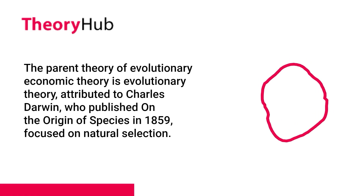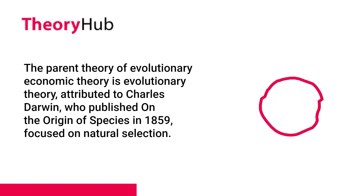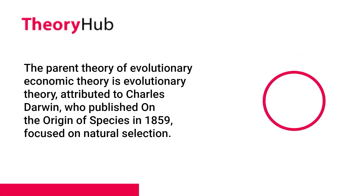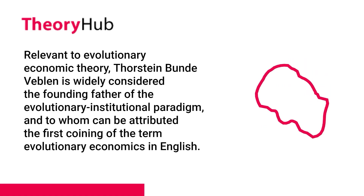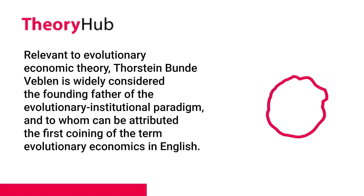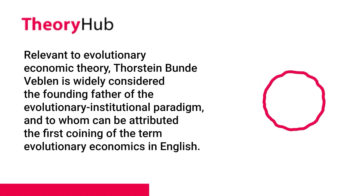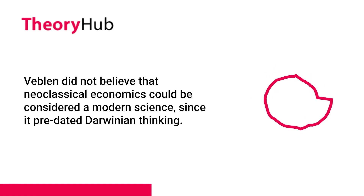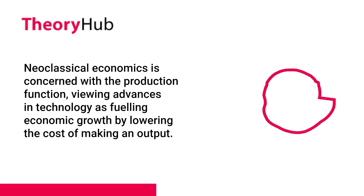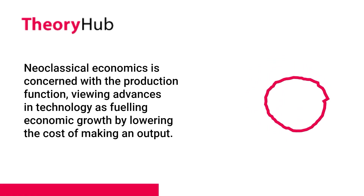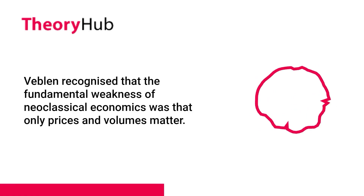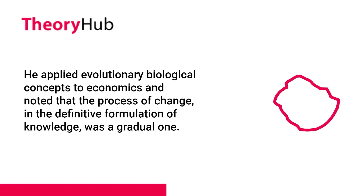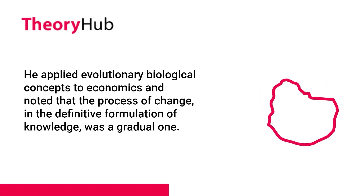The parent theory of evolutionary economic theory is evolutionary theory, attributed to Charles Darwin, who published On the Origin of Species in 1859, focused on natural selection. Thorstein Bunde Veblen is widely considered the founding father of the evolutionary institutional paradigm, and is attributed the first coining of the term evolutionary economics in English. Veblen did not believe that neoclassical economics could be considered a modern science, since it predated Darwinian thinking. Neoclassical economics is concerned with the production function, viewing advances in technology as fueling economic growth by lowering the cost of making an output. Veblen recognized that the fundamental weakness of neoclassical economics was that only prices and volumes matter.